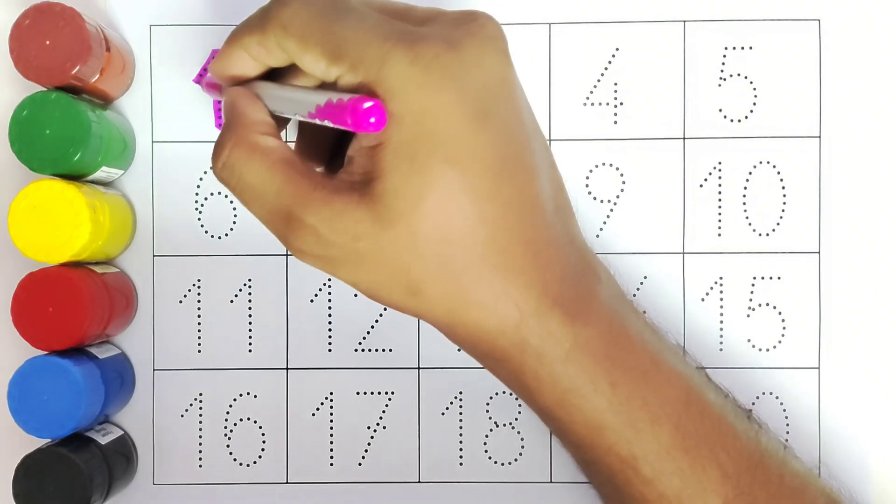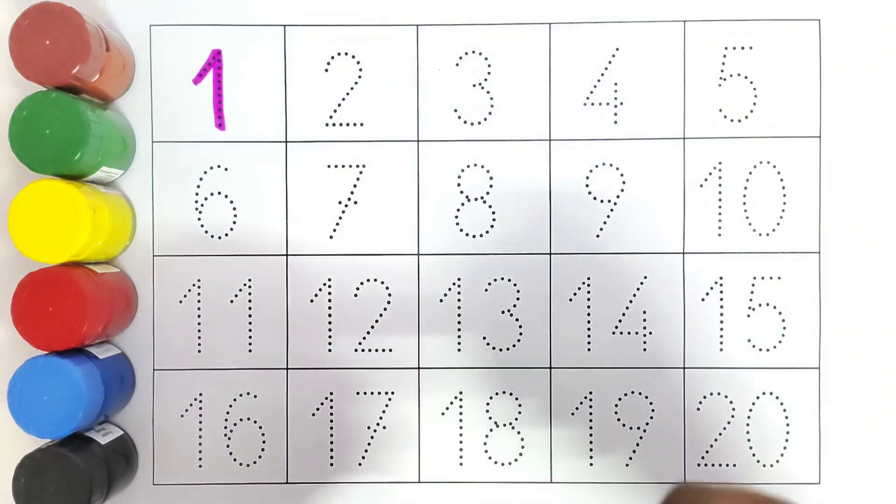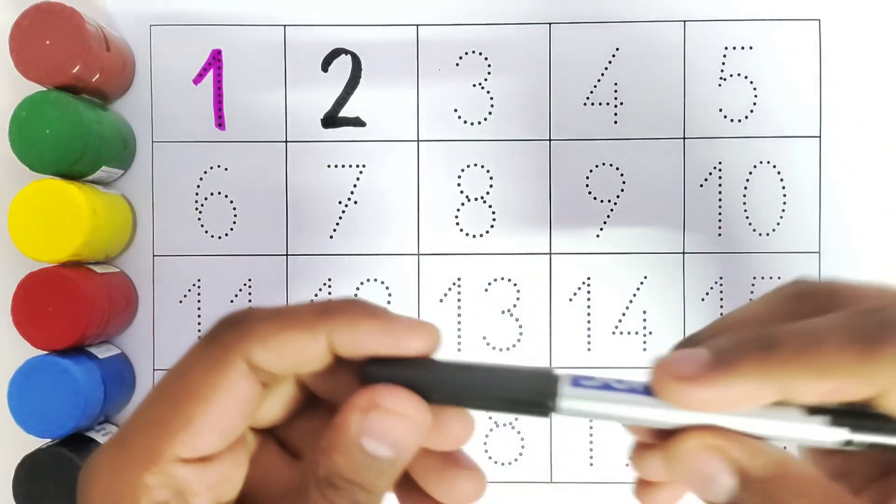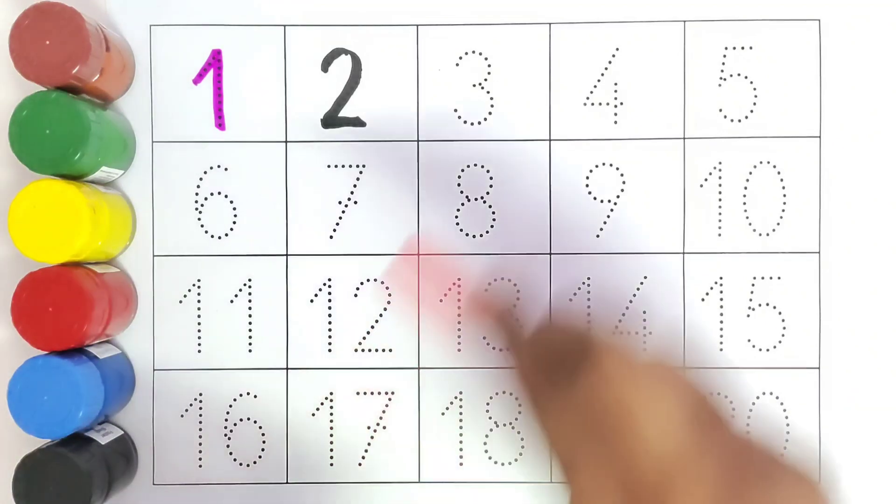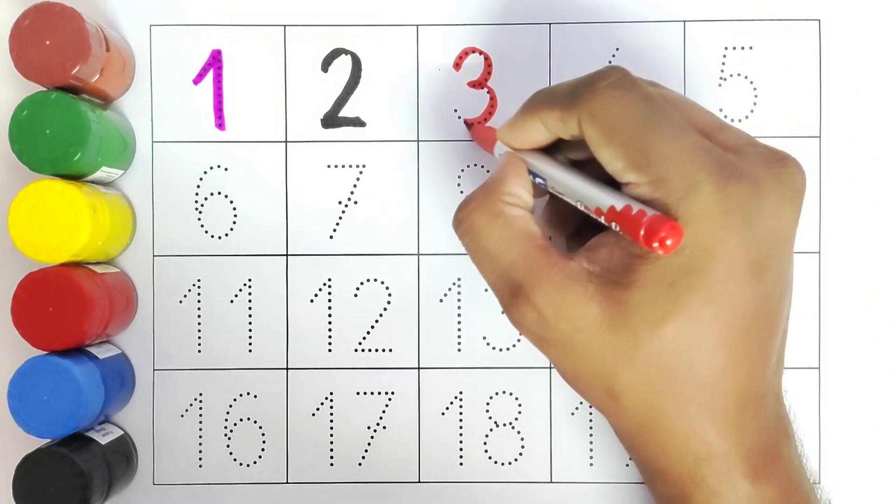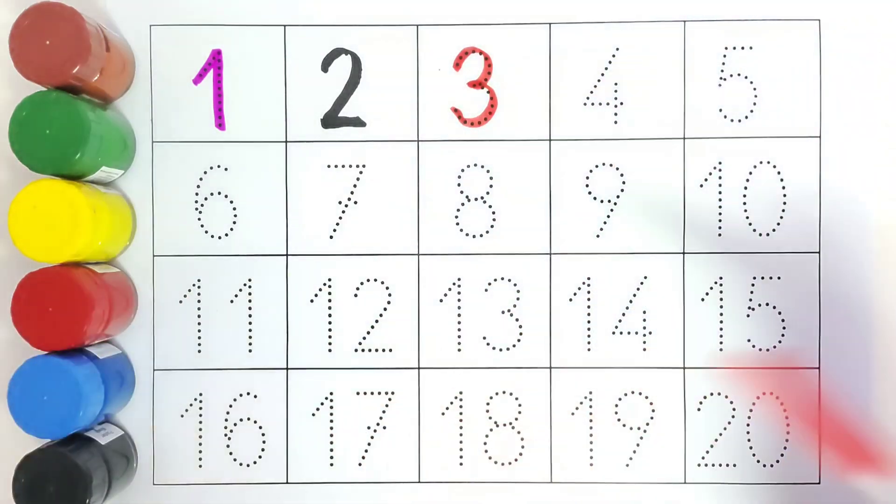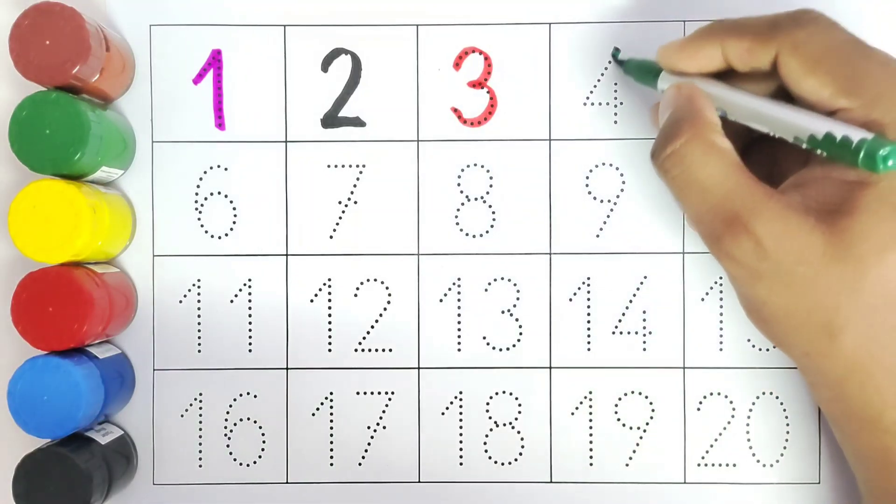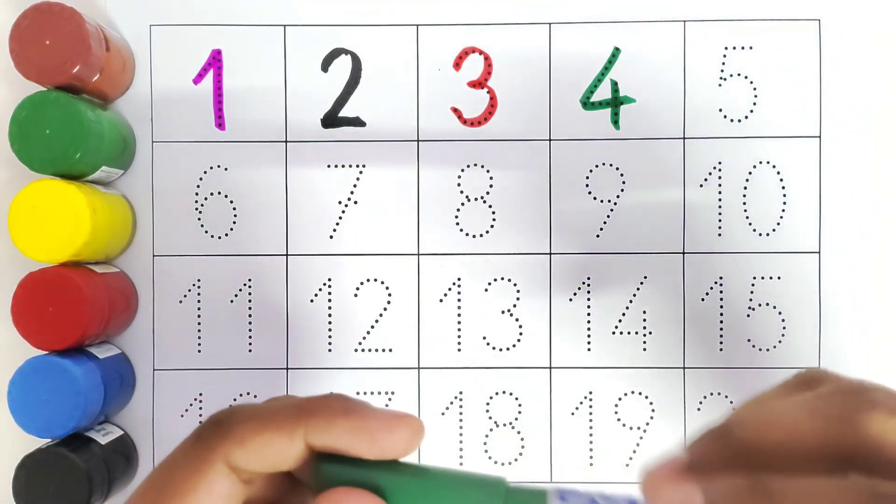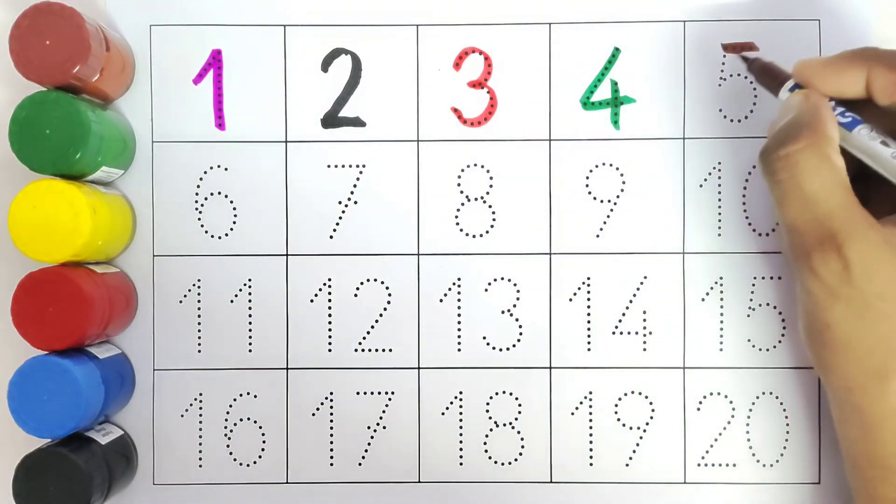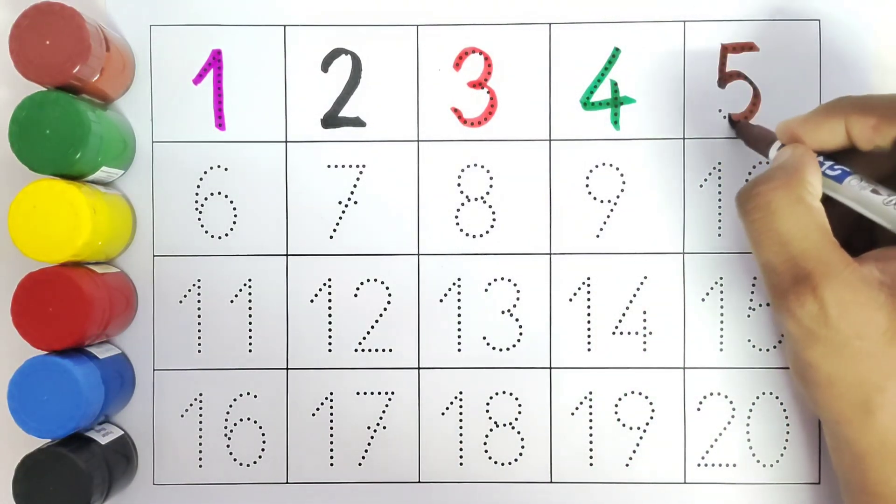One. One. Two. Two. Three. Three. Four. Four. Five. Five.